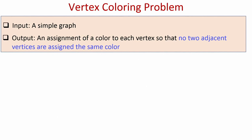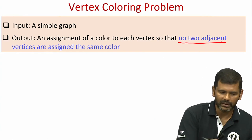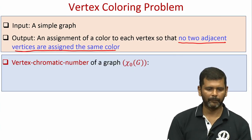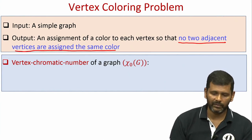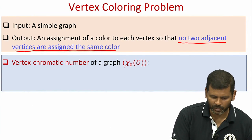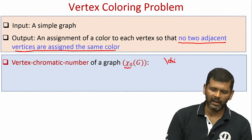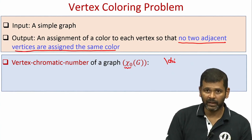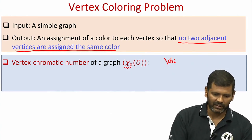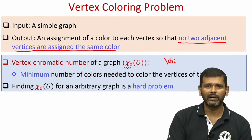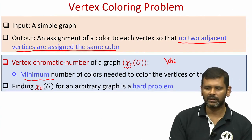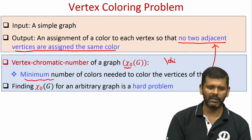Coming to the vertex coloring problem: the input is a simple graph, which may or may not be connected. The output is an assignment of a color to each vertex such that no two adjacent vertices are assigned the same color. The vertex chromatic number of a graph, denoted χ₀ (chi-naught, pronounced 'chi'), is the minimum number of colors needed to color the vertices so that no two adjacent vertices share the same color.